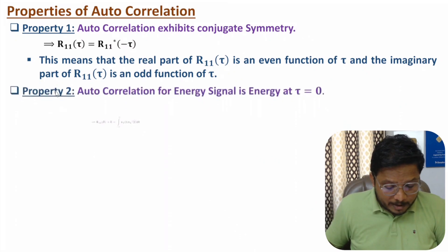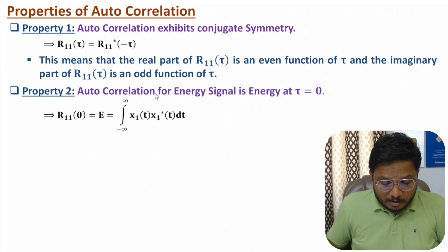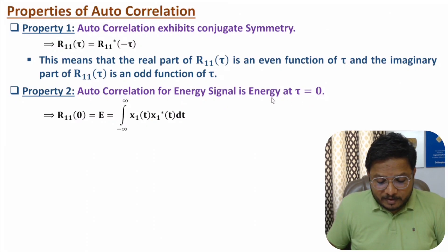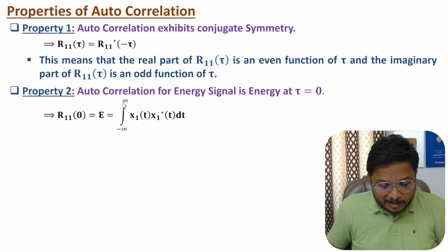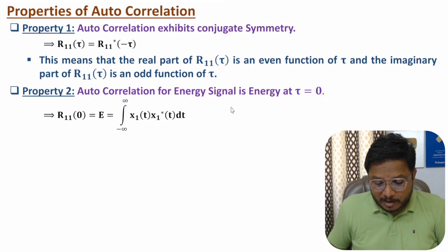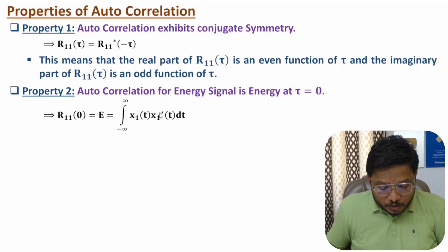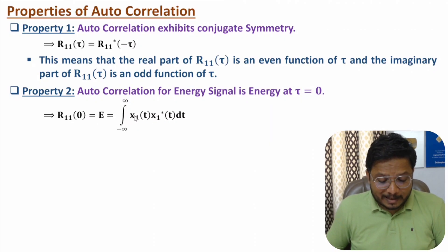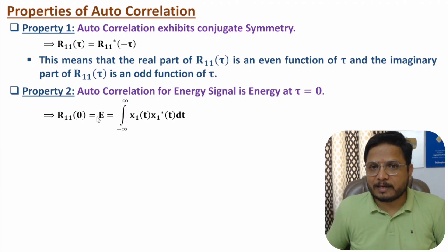The second property is: auto correlation for an energy signal at τ equals zero is the energy of the signal. Using the basic definition — integration from minus infinity to plus infinity of X₁(t) into X₁*(t) dt with τ equal to zero — this gives |X₁(t)|², which is the energy of the signal. So R₁₁(0) equals the energy of signal X₁(t).